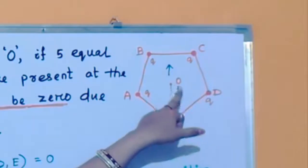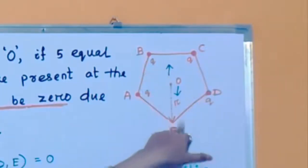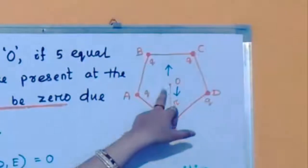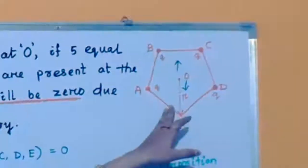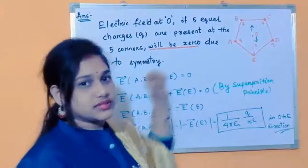Because all the electric fields due to A, B, C, D, E cancel with each other. So electric field at O is zero. So using this concept we will proceed through the solution.